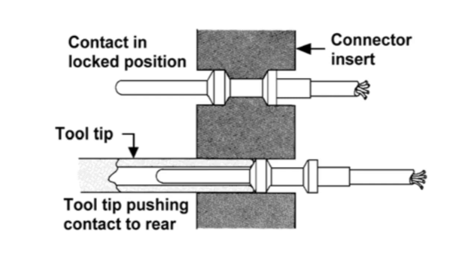Contacts are installed and removed by force using the proper tooling. This kind of connector is used in areas outside the aircraft such as the wheel wells. The contacts are usually inserted from the rear of the connector and removed from the front of the connector.